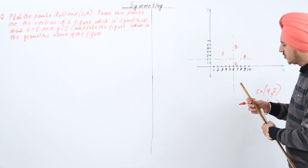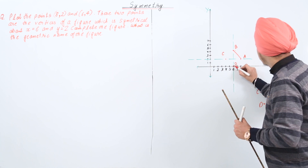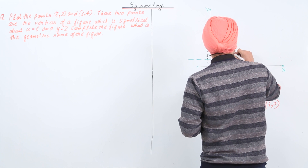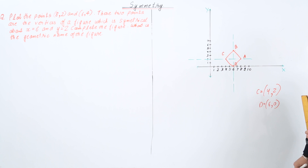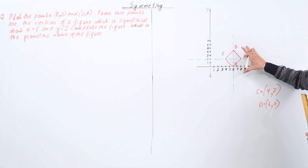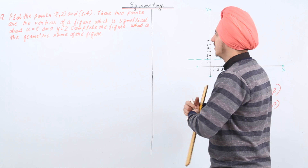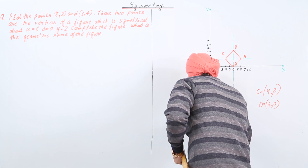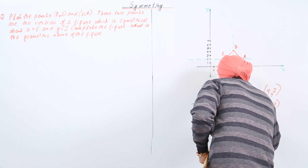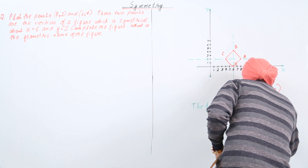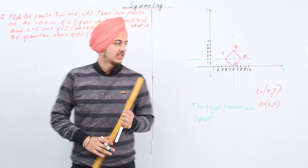We will join these four points to complete the figure. Joining them gives us the shape. The figure formed is a square. And that's it — the geometrical name of the figure is a square.